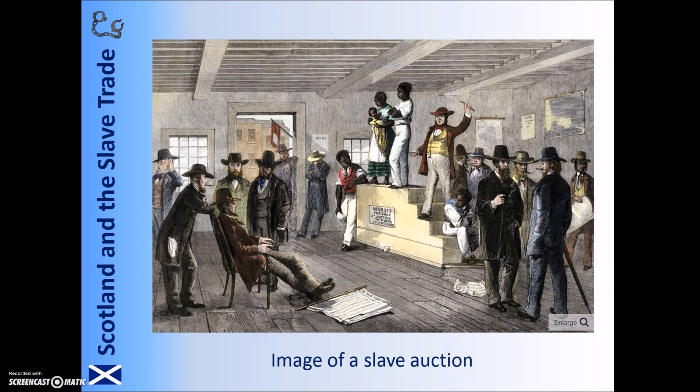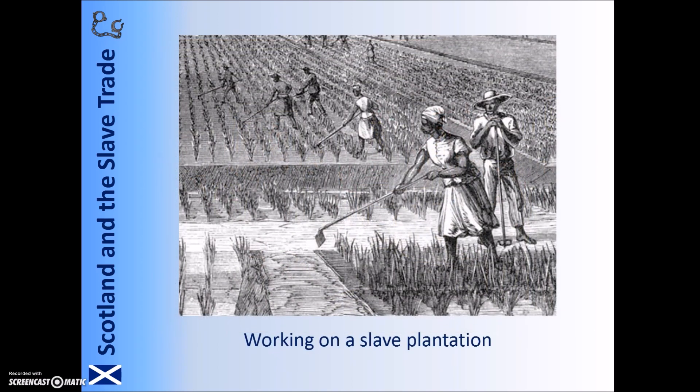Once in the Americas, the Africans were sold as slaves, mainly at auctions, but also sometimes at a scramble. They were then taken to work in locations such as farm plantations, as well as factories and mines. Life as a slave could be brutal. In addition to long working hours in hot conditions, slaves had to endure harsh physical punishment and poor living conditions, such as overcrowded housing.